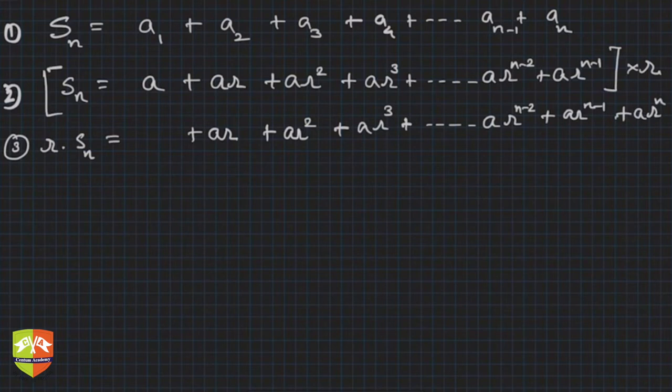How did n come? Because here it was r to the power 0 to n minus 1. If you multiply by r then it will start going from 1 to n. Correct? It is going from 0 to n minus 1. If you multiply by r then it will start going from 1 to n. Clear?